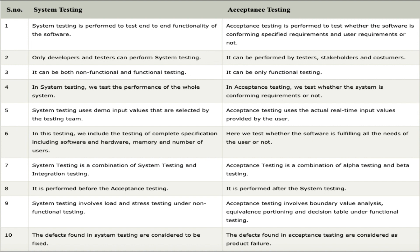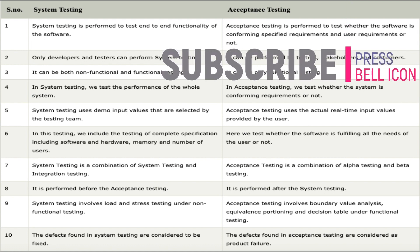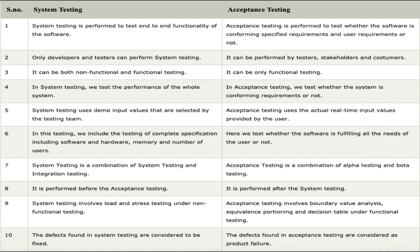Point two: in system testing, only developers and testers can perform the testing, whereas acceptance testing can be performed by testers, stakeholders, and customers as well. Point three: system testing can be both non-functional and functional testing, whereas acceptance testing can only be functional testing.